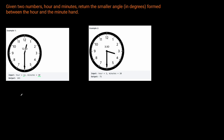So let's do the minutes first. Minutes is going to be whatever the minutes value is — so 30 — and how many degrees are in a minute. If there's 360 degrees in an hour and 60 minutes per hour, then 360 divided by 60 gives us degrees per minute. So this means the minute hand has 180 degrees.